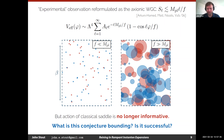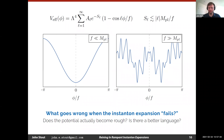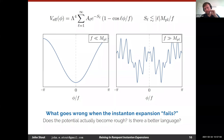If anyone has any questions, please ask — it's a Zoom talk and it's hard to gauge whether what I'm saying is sparking joy or not. Another way of asking this: what goes wrong when this instanton expansion fails? Does the potential actually become rough? The general idea is that as I take F to be very, very super-Planckian, if I can keep the instanton action very large, then the potential is relatively smooth.